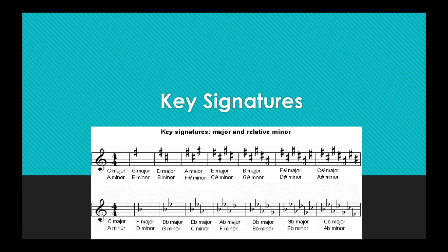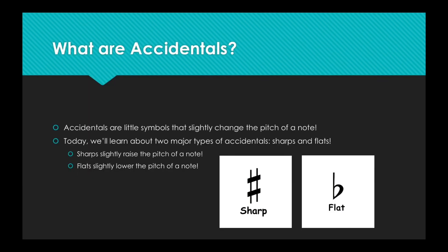Now let's talk about key signatures. Before we talk about what key signatures do, we have to talk about one major topic: accidentals. Accidentals have the power to slightly change the pitch of a note. There are sharps, which look like a tic-tac-toe board, that slightly raise the pitch of the note. And flats, which look like lowercase b's, that slightly lower the pitch of the note.